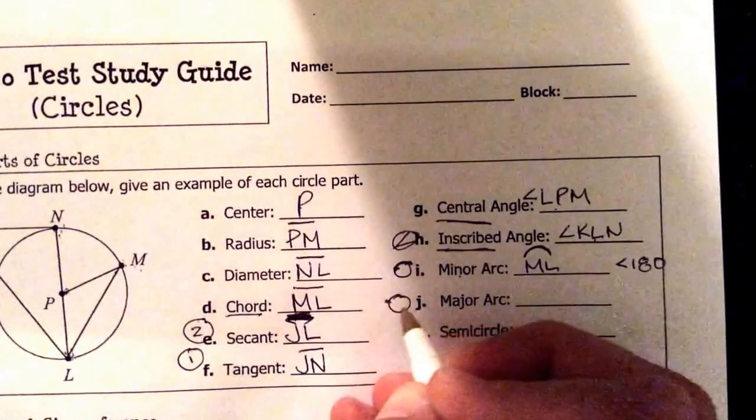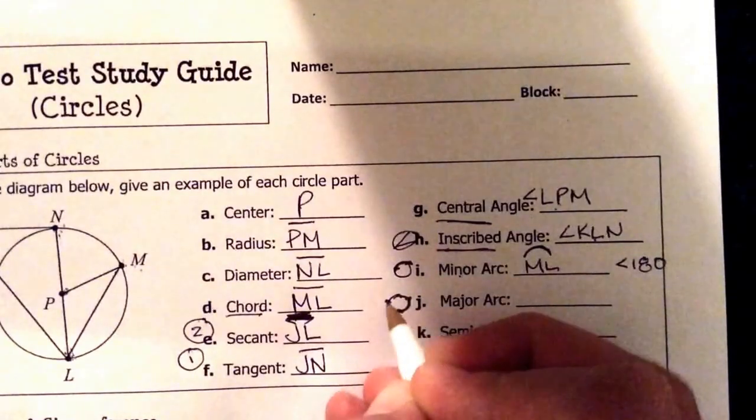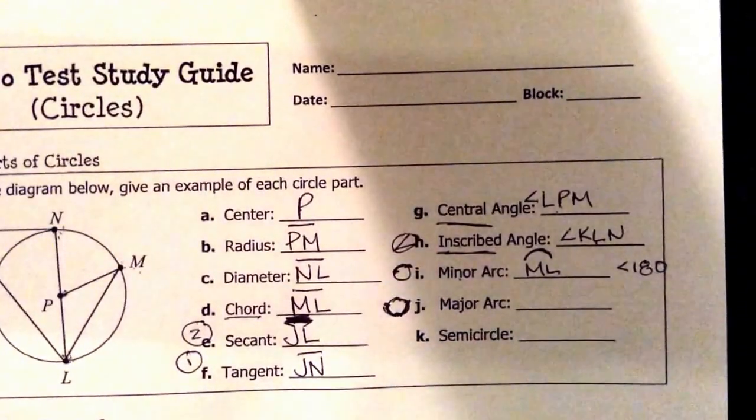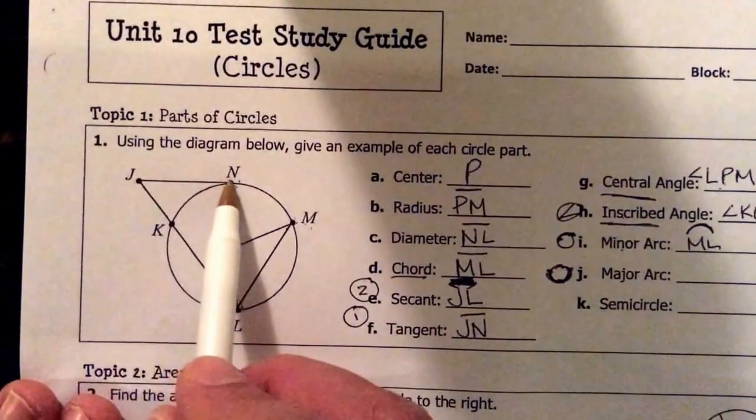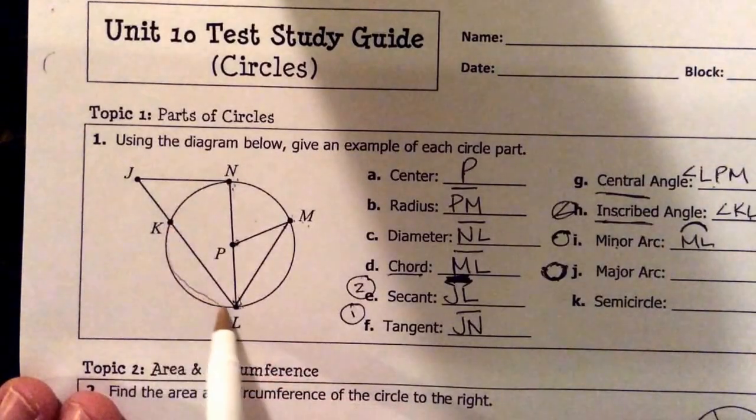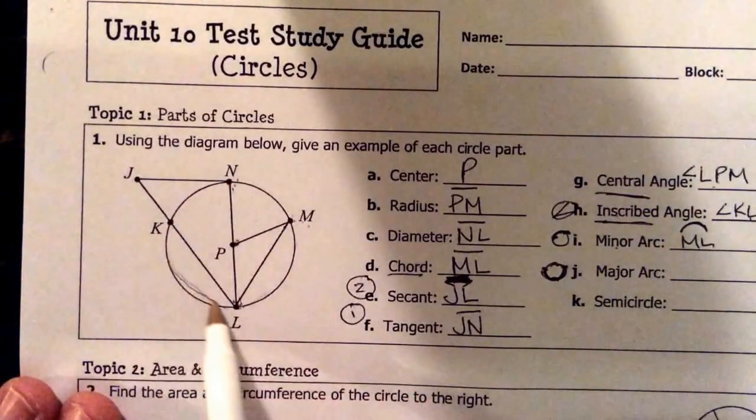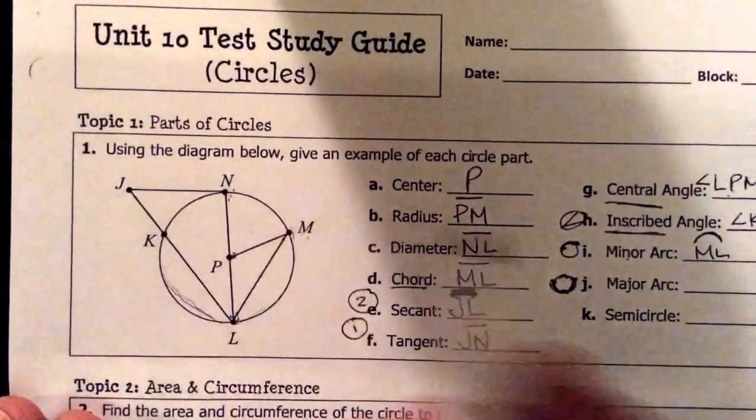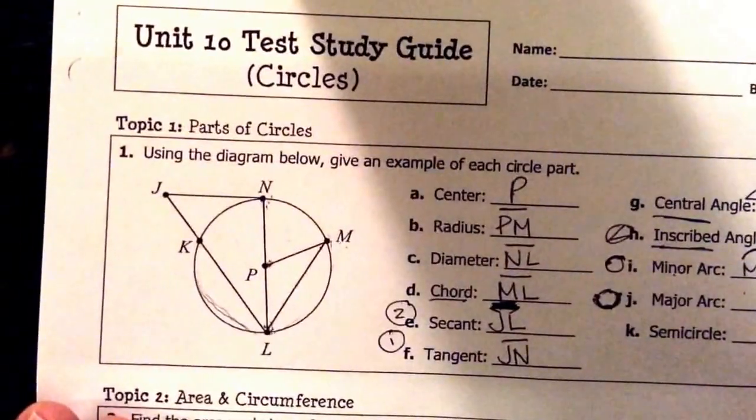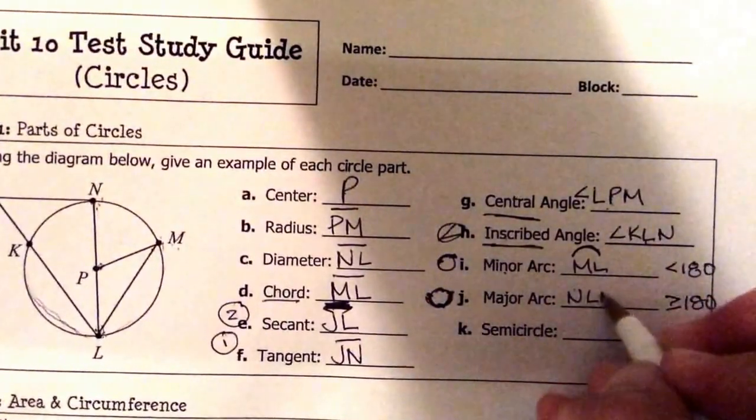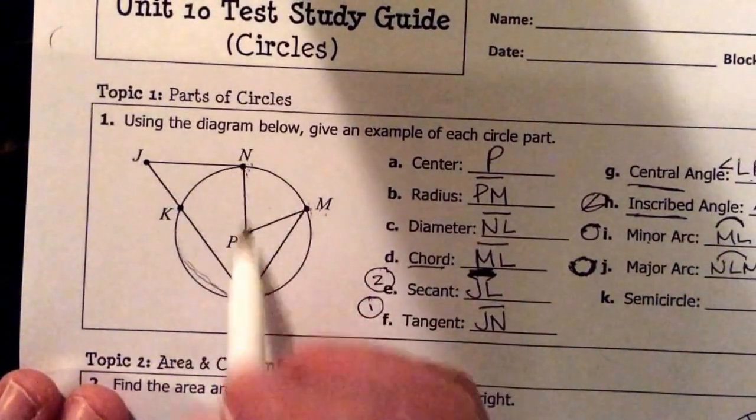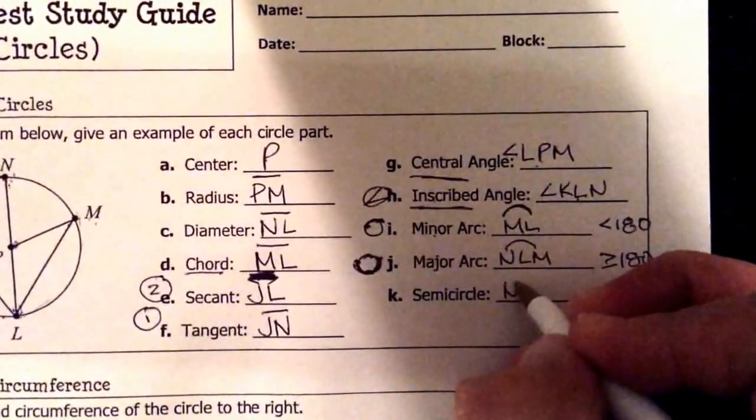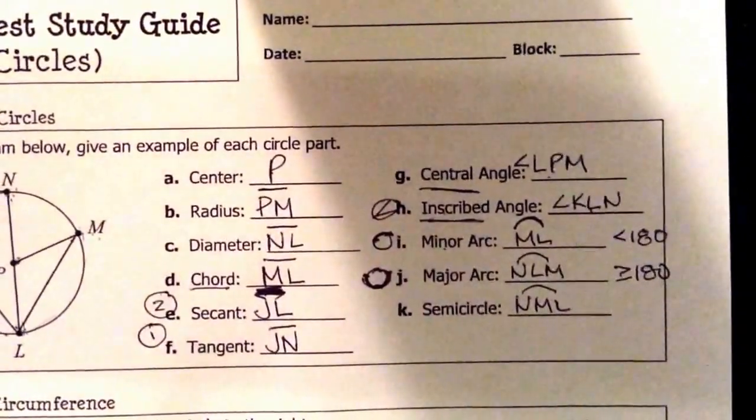A major arc is similar to a minor arc. It's going to use three points, and it's going to cover a piece of crust that is larger than 180 degrees. So, or I should say, greater than or equal to 180 degrees. So I'm going to choose, if I go from N all the way through L to M, that means I'm covering this whole section right here, everything except NM. So I'm going to say arc NLM. Again, a major arc is three with a curve over it. A semicircle, again, is a half of circle, so we can say NML or NKL.